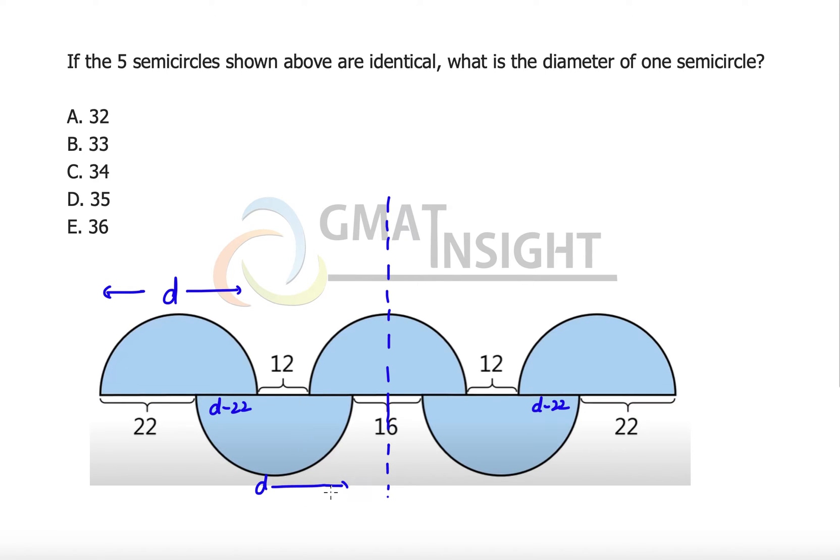We also know that the distance of these two points will be d. That means this particular distance can be identified as d minus (d minus 22) plus 12. So out of the entire length d, I am subtracting this distance and this distance to find out this particular distance.